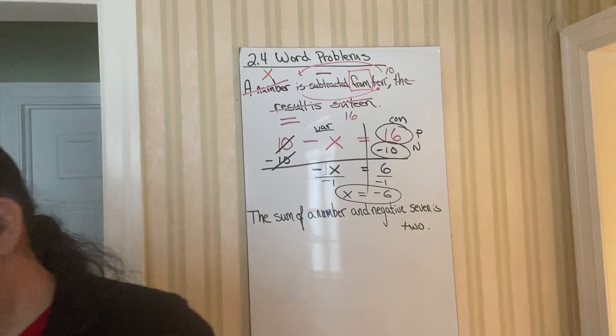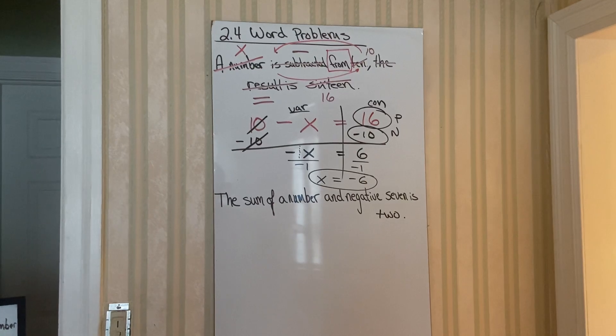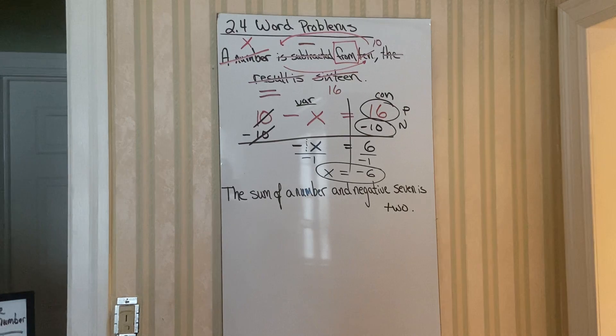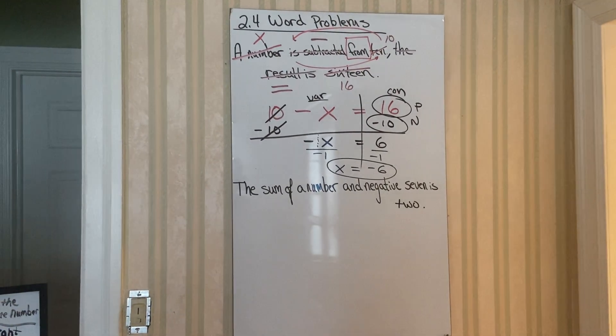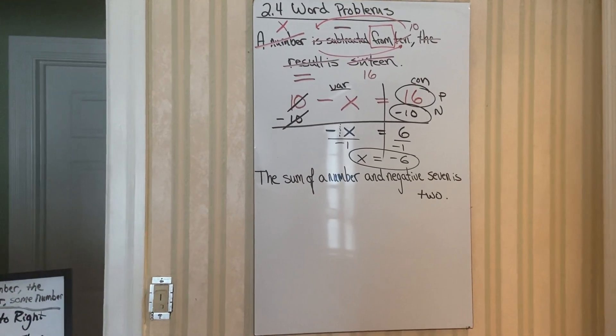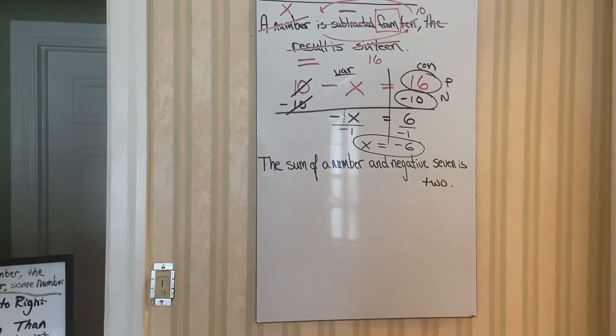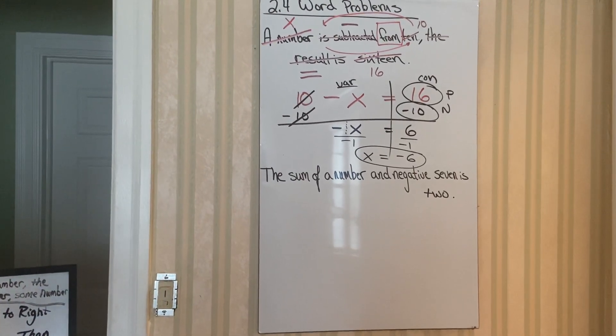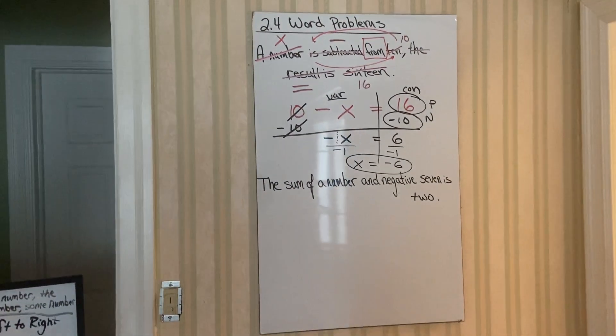So you got to be careful when you have the word from or than. The reason why you have to be careful is because when you're dealing with subtraction, subtraction from or less than, they're not commutative. You have to have them in a certain order. Because remember, 10 minus 2 is 8. But if I flip the order and put the 2 first, 2 minus 10, you get a negative 8. You get two different answers. So order really matters when you have subtraction and the danger word from and than. Okay.